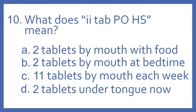Number 10. What does II tab PO HS mean? A. Two tablets by mouth with food. B. Two tablets by mouth at bedtime. C. 11 tablets by mouth each week. Or D. Two tablets under the tongue now.